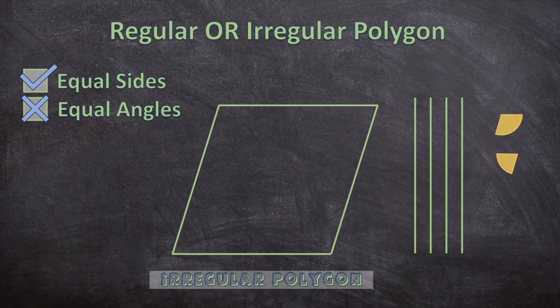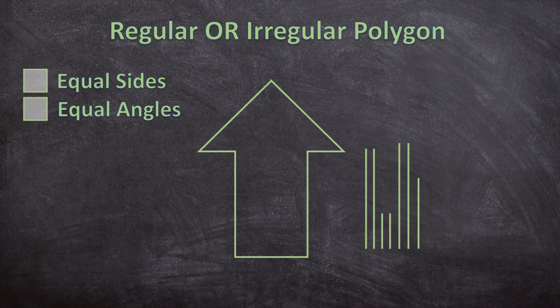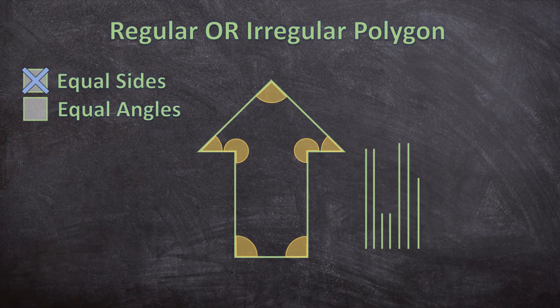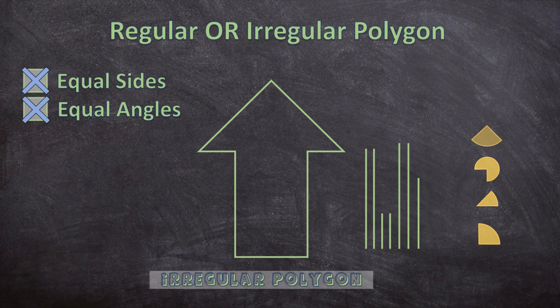Now let's look at the last shape. Let's first see if all the sides are equal. As you can see, the sides are not equal, so we cannot tick the first box. Let's also look at the angles — the angles are also not equal, so we cannot tick the second characteristic either. This shape has unequal sides and unequal angles, so this is also an irregular polygon.